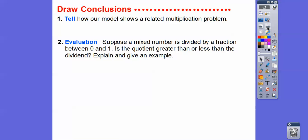All right, so tell how our model shows a related multiplication problem. Well, okay, it shows that there's 10 groups of 1/6, or those 10 triangles right there, and that gave us 1 and 2/3. And so to relate it for a multiplication problem, 10 times 1/6 equals 1 and 2/3.